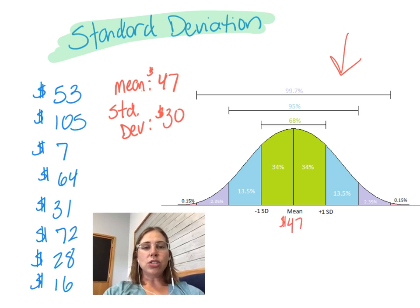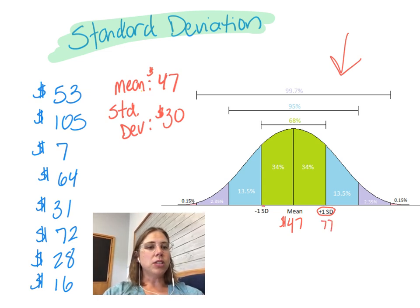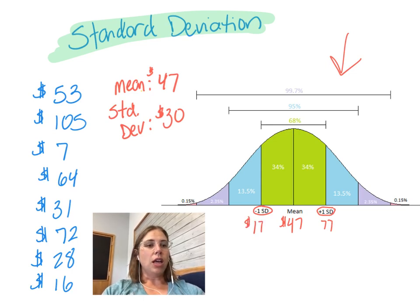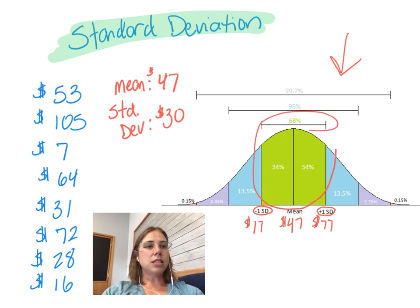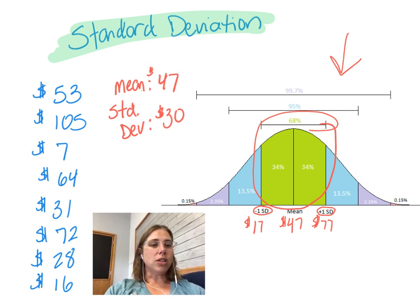Now, since the standard deviation is $30, you see this right here — it says plus one standard deviation. So we would add on one standard deviation, which would take us to $77. Over here, this says minus one standard deviation, so we would subtract $30, and we'd be down to $17. What this is telling us is that 68% of our data is going to fall within one standard deviation of the mean, or between $17 and $77.